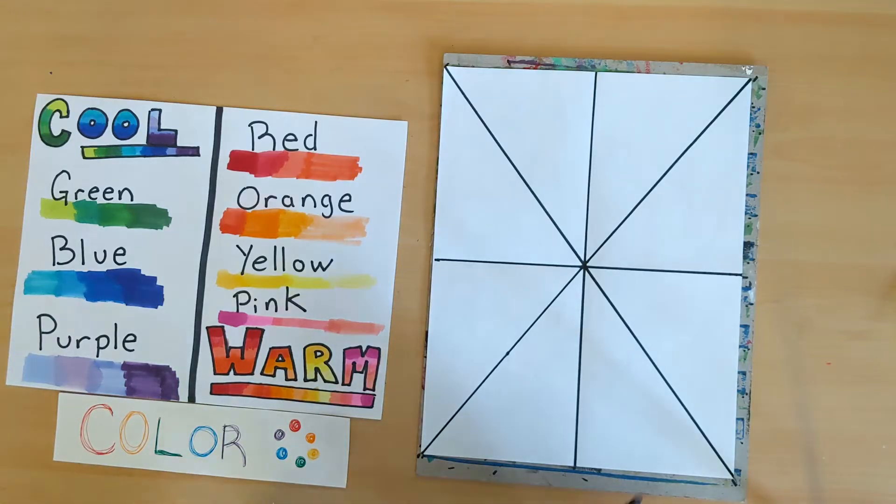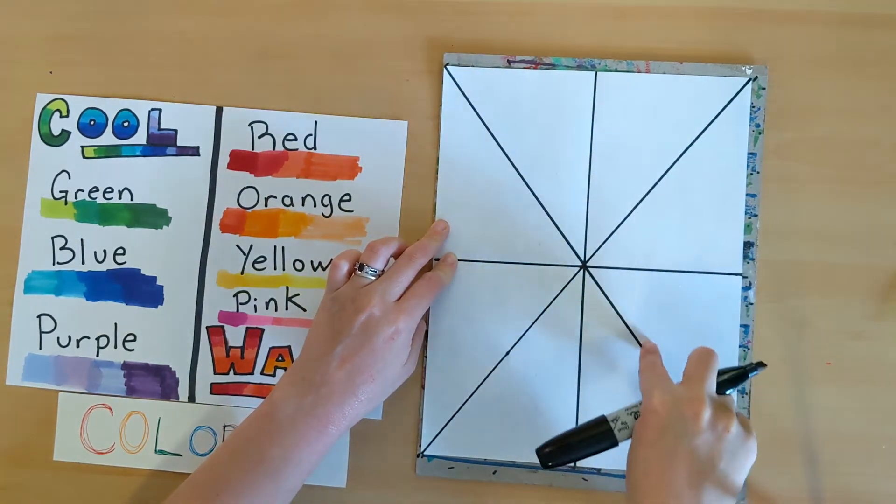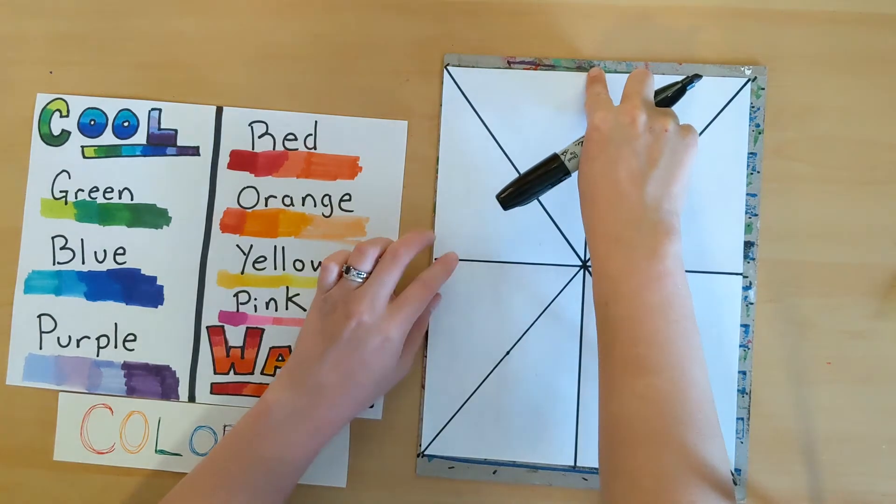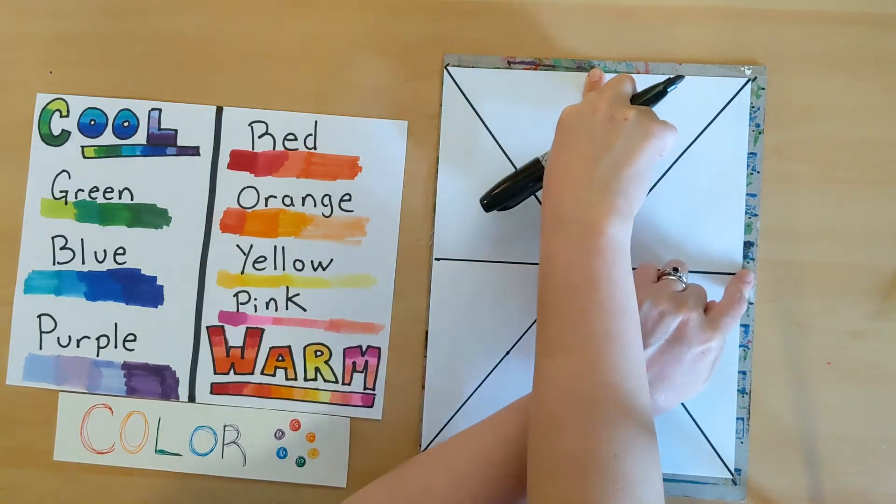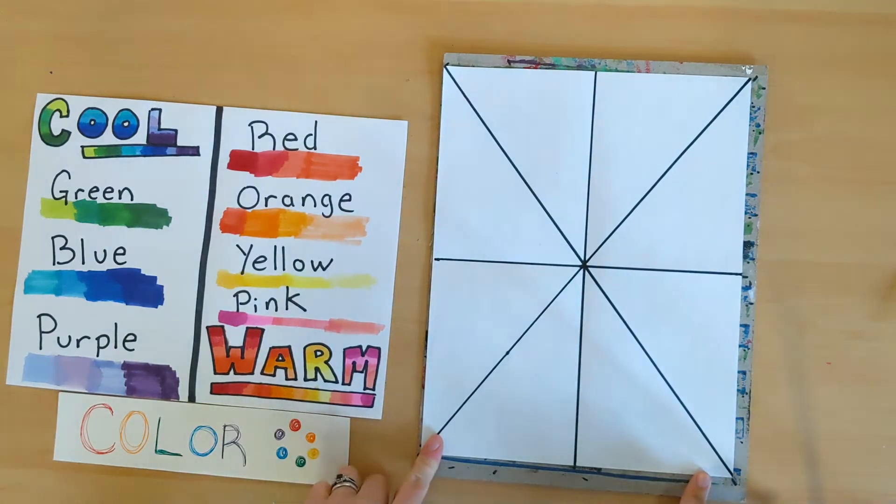And now I have my lines drawn. I have one, two, three, four, five, six, seven, eight lines. One on every flat edge for four, and then one on every corner for four. Eight in total.